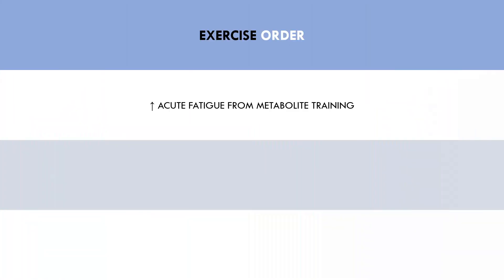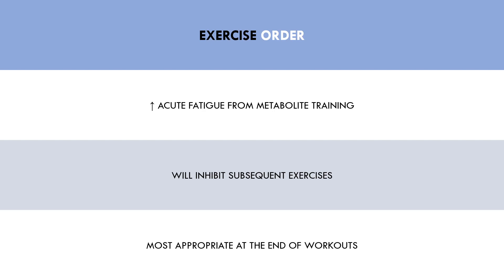The next factor to consider is exercise order. Metabolite style training is generally more fatiguing on the target muscles and cardiovascular system compared with traditional sets, due to the large accumulation of metabolic byproducts. This means subsequent exercises involving that muscle group will probably be inhibited quite severely. Therefore, it is most appropriate to use metabolite style training for exercises at the latter end of a workout, almost as a finisher technique, so the acute fatigue won't inhibit performance of subsequent exercises.